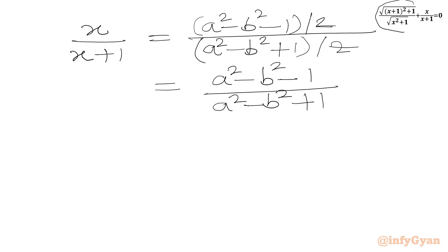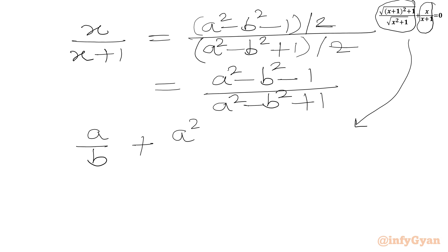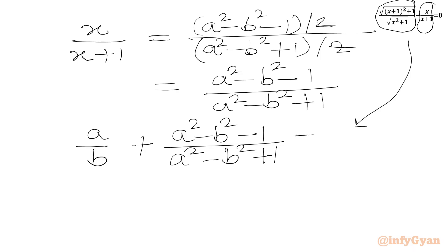So this is our a/b expression. We have a/b + (a² − b² − 1)/(a² − b² + 1) = 0.